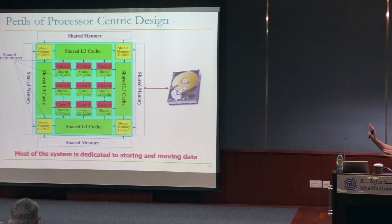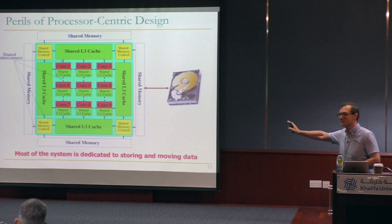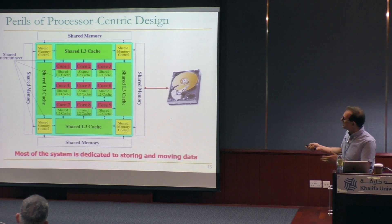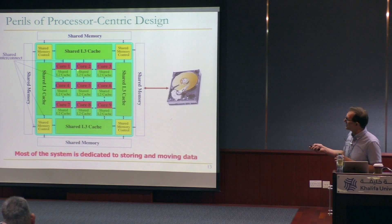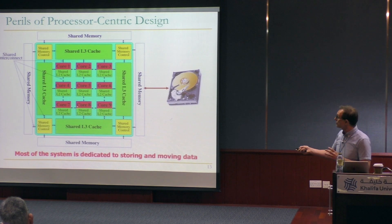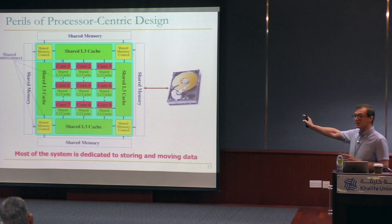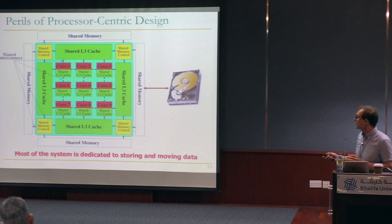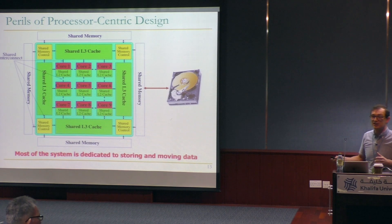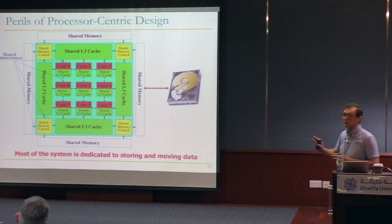This is my cartoonish picture of an existing system, which I drew in 2008. If you look at this node, the red parts are doing computing. Everything else is dedicated to storing and moving data. Even in the red parts, most of the pieces — register files, line caches, interconnect — are really dedicated to storing and moving data. We call these computing devices, but more than 90% of the resources of a single node are dedicated to data storage and movement.